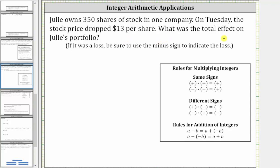The total effect is equal to the gain or loss per share times the number of shares. And because the price dropped $13 per share and Julie has 350 shares, the total effect is equal to negative 13 times 350. The negative 13 indicates the drop of $13 per share.